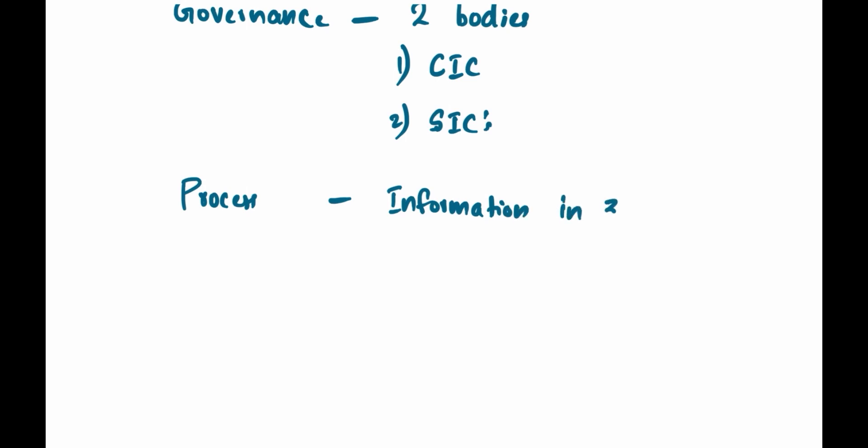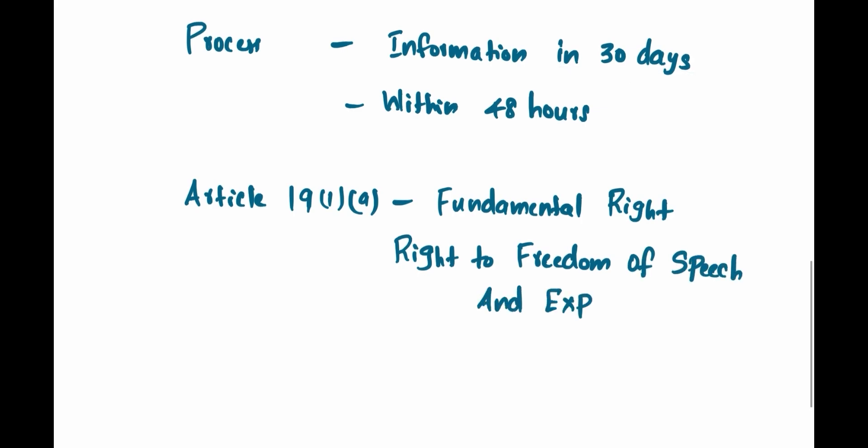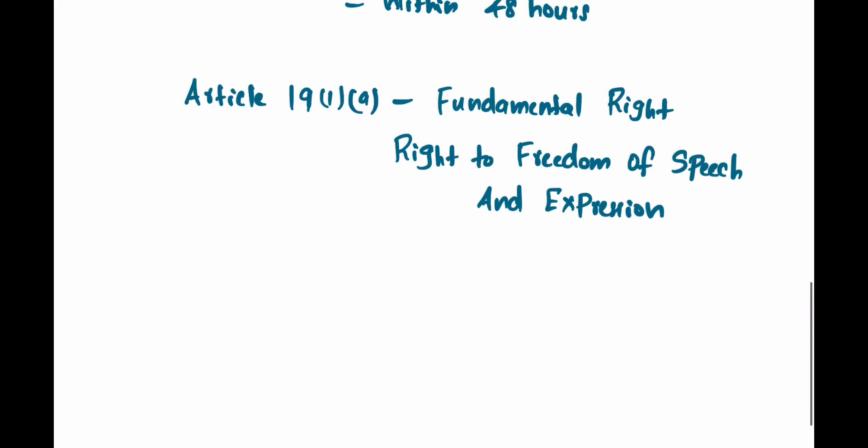When information is requested by a citizen from a public authority, it has to be replied within 30 days. And when information is sought regarding the life and personal liberty of the petitioner, it is to be replied within 48 hours without any delay. It is important to note that the Right to Information is an implied fundamental right under Article 19 of the Indian Constitution. It comes along with the right to freedom of speech and expression, hence it is an implied fundamental right.